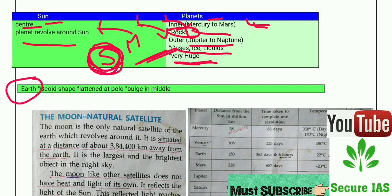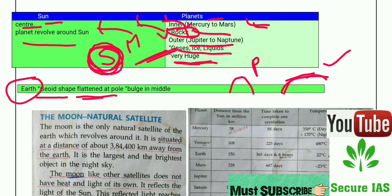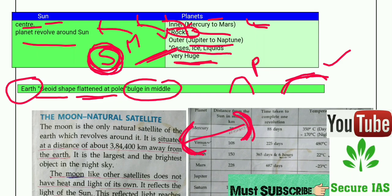One important thing to note: the shape of the Earth is geoid. This means it is flattened at the poles — not perfectly round at the poles — and it bulges in the middle along the equatorial axis, meaning it extends outward in the middle.